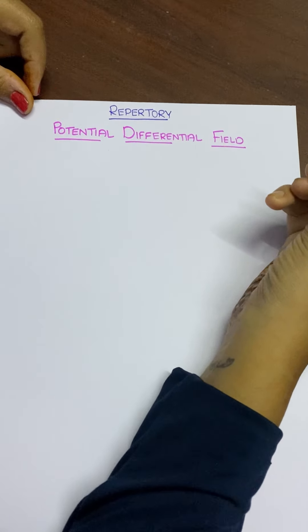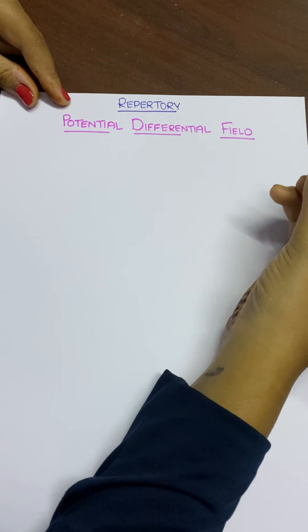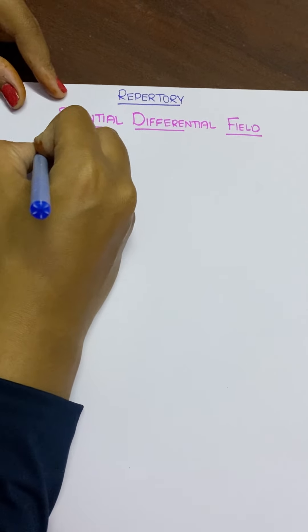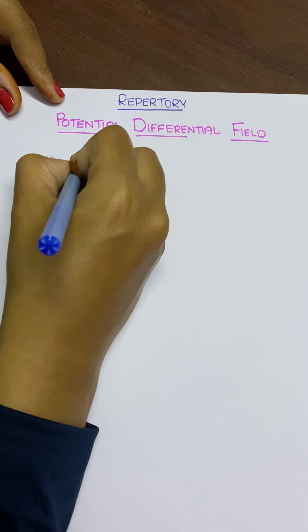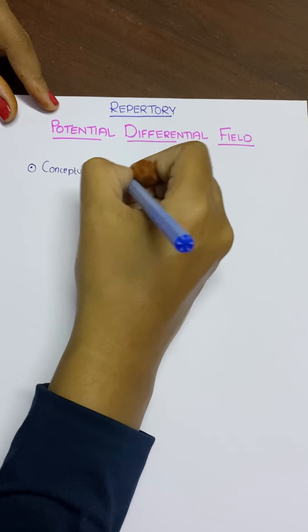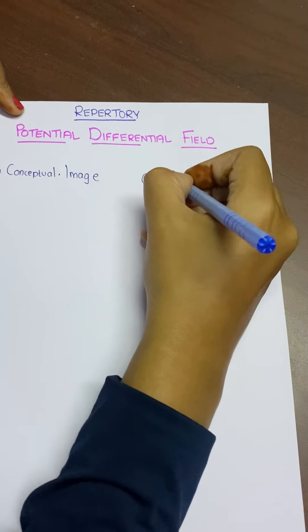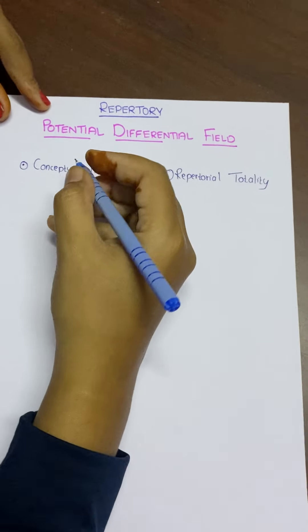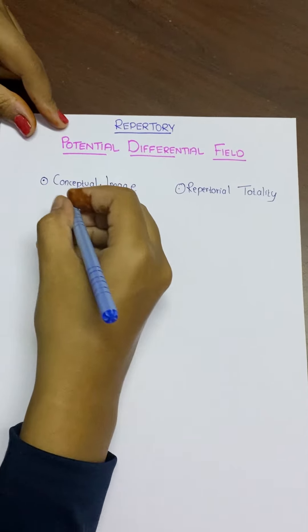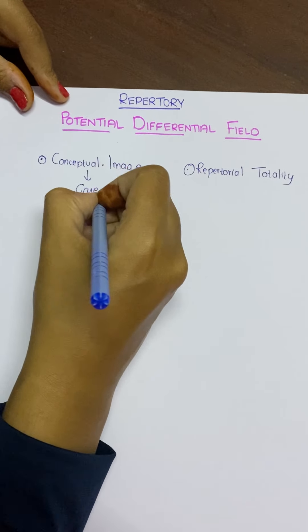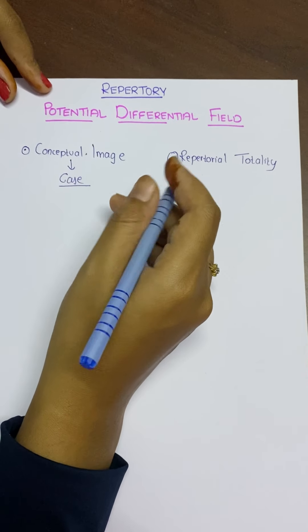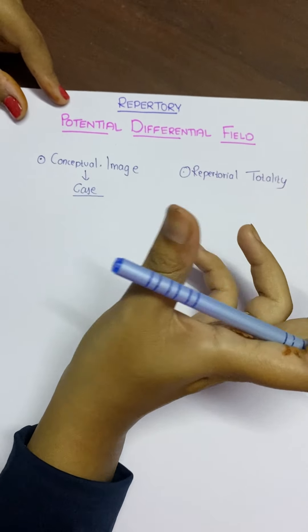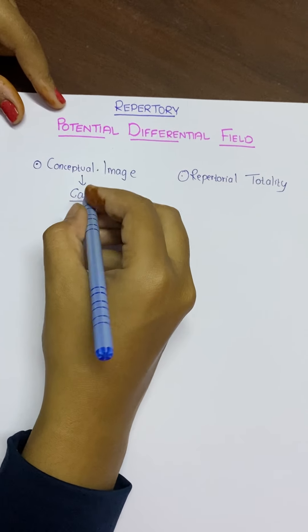Potential Differential Field is a concept interlinked with Repertorial Totality and Conceptual Image, so we should be aware of these two concepts. What is a Conceptual Image of a case? By case-taking, we form the logical image of the case. We obtain information and form the portrait of the disease by collecting information from the patient, patient's attendants, and the physician's own observation.